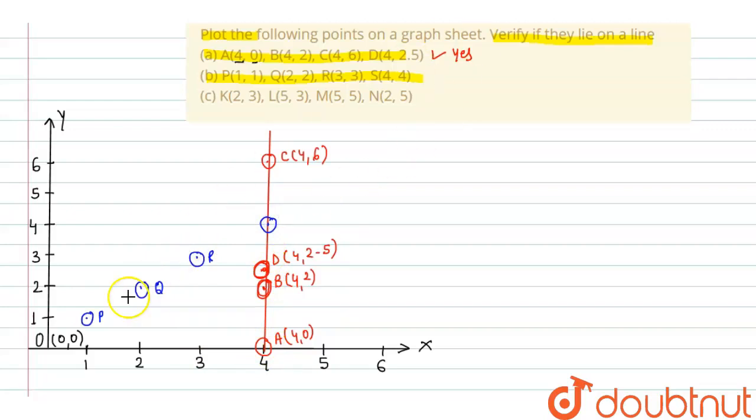When we join this, it is also a straight line from P to R. This is R. So yes, this is also a straight line.